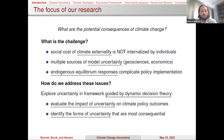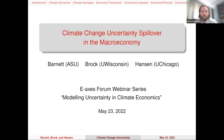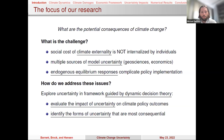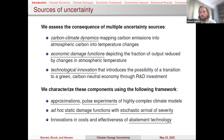What we want to do is explore uncertainty in a framework guided by dynamic decision theory. This is joint work with my co-authors Buz Brock and Lars Hansen. We'll evaluate the impact of uncertainty on policy outcomes and identify the forms of uncertainty that are most consequential — not because of ex-ante assumptions, but because we let the dynamic decision theory identify what matters most to the planner. We'll assess the consequences of multiple uncertainty sources: carbon-climate dynamics, economic damage functions, and technological innovation that introduces the possibility of a transition to a green, carbon-neutral economy through R&D investment.